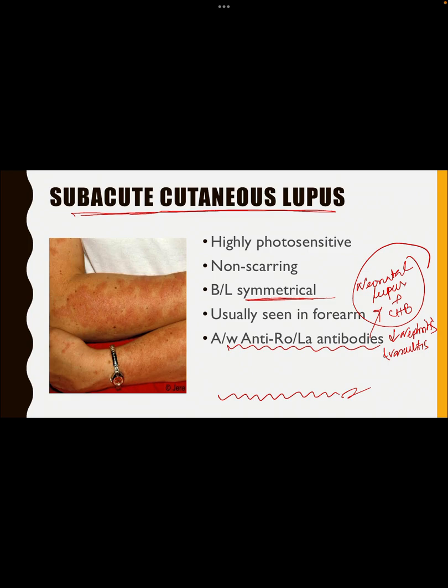The presence of anti-Ro and anti-La antibodies usually decreases the chances of nephritis and vasculitis. In contrast, anti-dsDNA antibody indicates higher chances of nephritis and vasculitis. Remember: anti-Smith antibody is the most specific antibody for SLE, but in clinical practice to monitor remission or relapse, we use anti-dsDNA antibody, because it correlates with nephritis and vasculitis. Whereas anti-Ro and anti-La are associated with decreased chances of nephritis and vasculitis, and with neonatal lupus and congenital heart block.